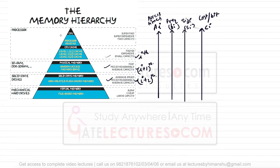As mentioned, if the CPU is looking for some data and that data is found at a particular level, that is called a hit. If that data is not found at that particular level, that is called a miss.